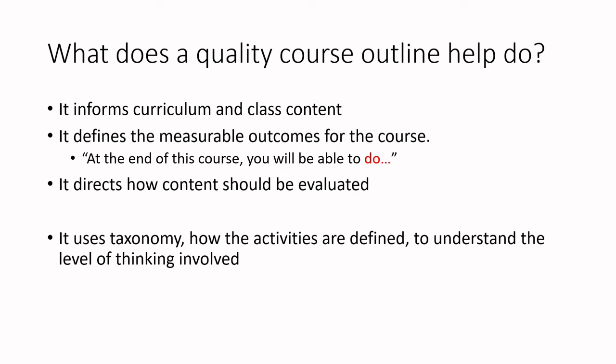A good course outline is also going to help direct how your content is evaluated. Those active verbs are going to help you figure out what level of performance the student needs to demonstrate. For example, if you want students to be able to create a new food product, you are likely not going to be doing multiple-choice exams — you're likely going to give students some sort of open-ended project where they go through and develop a new food product.